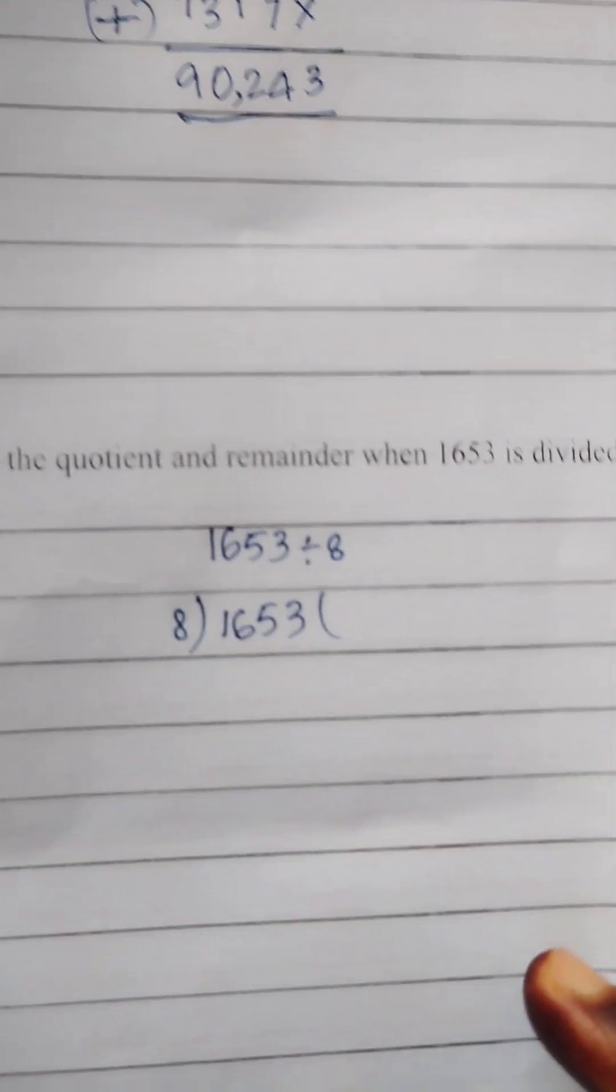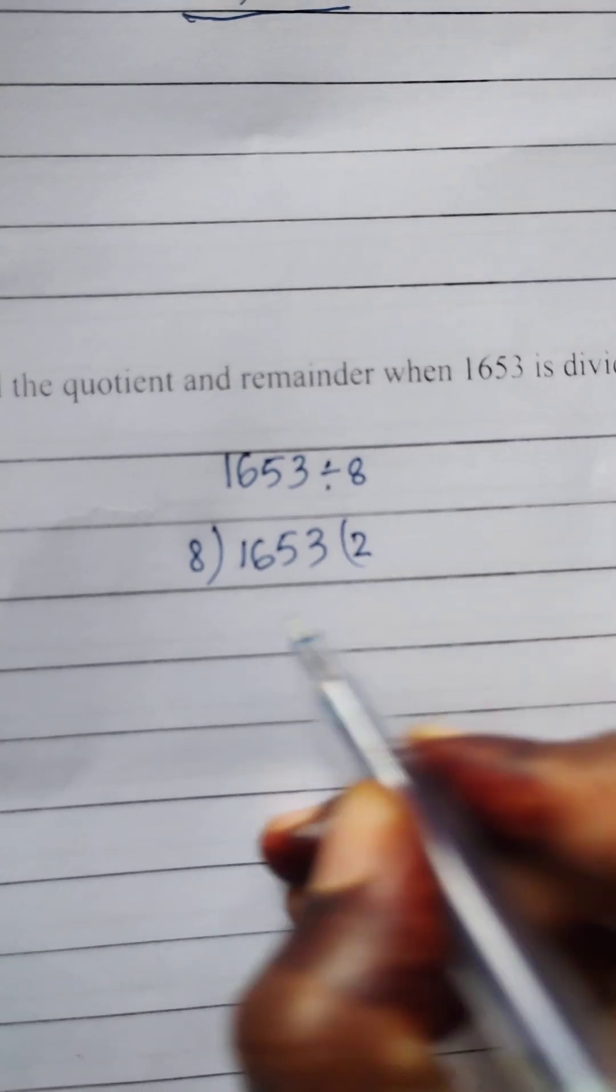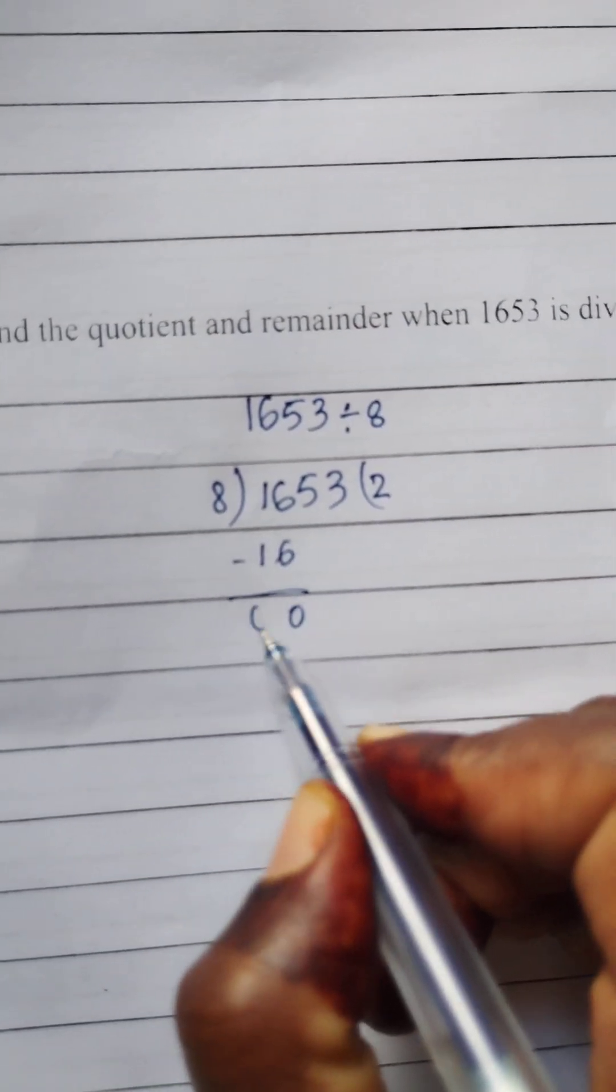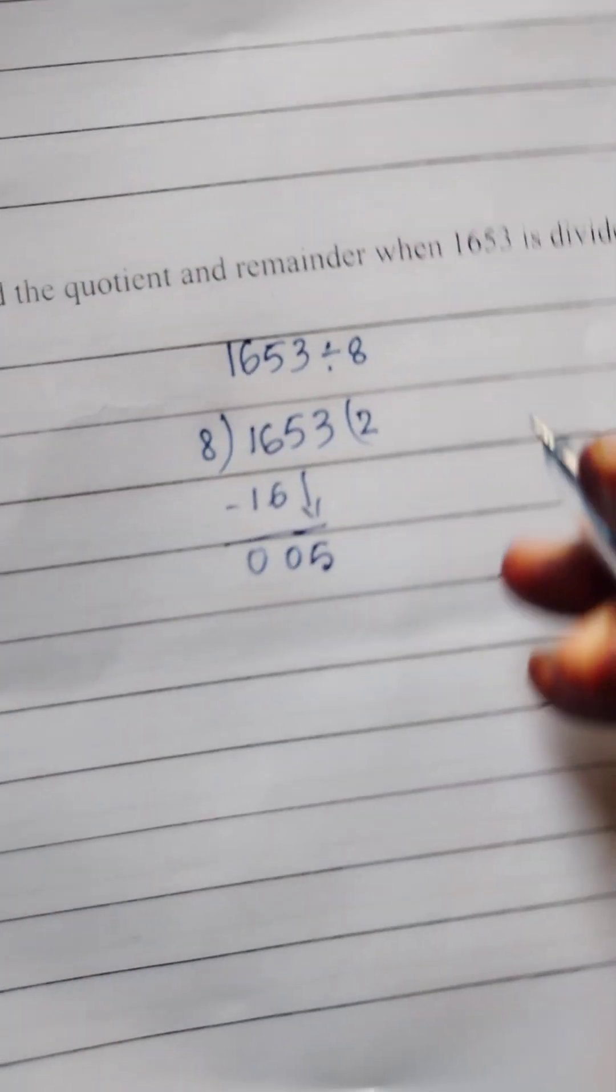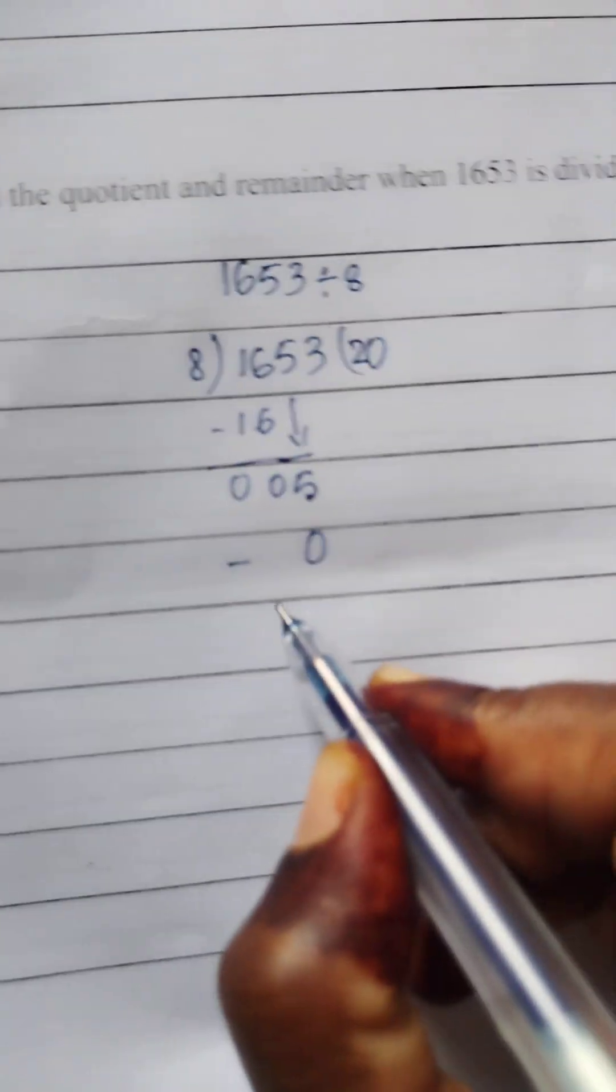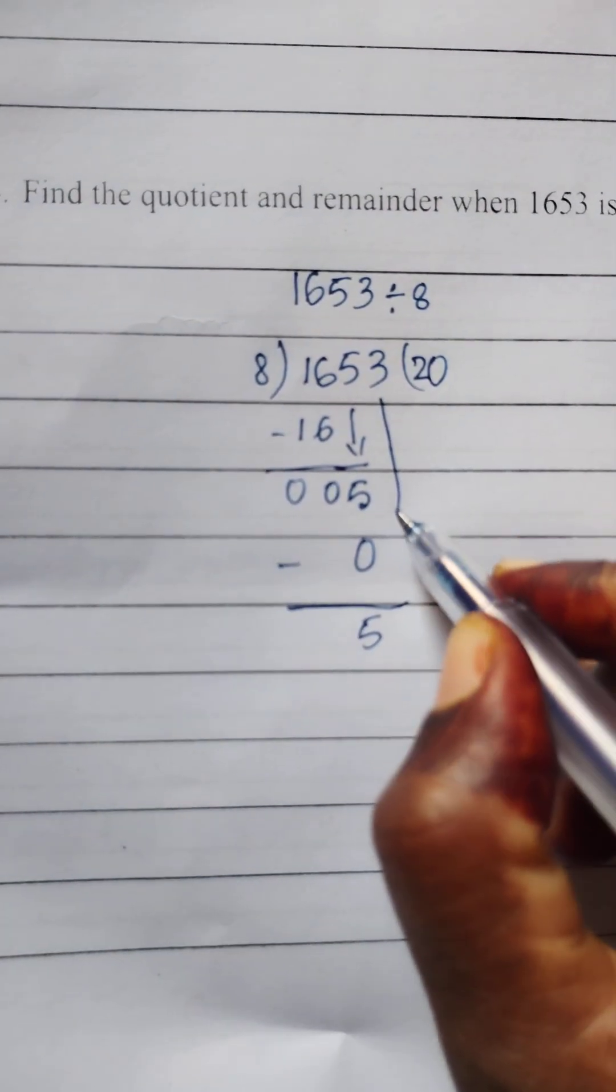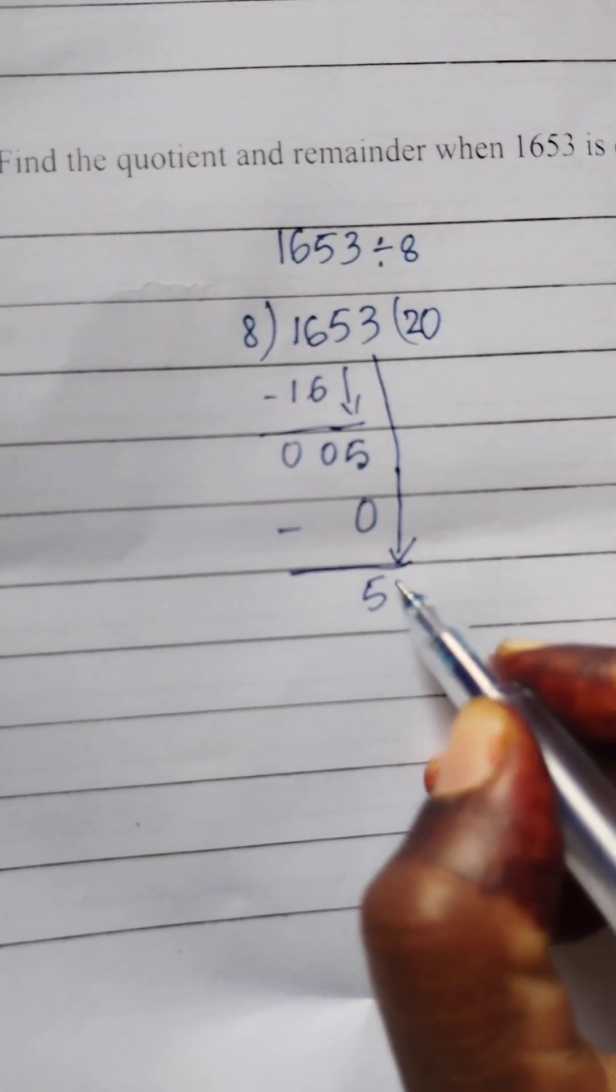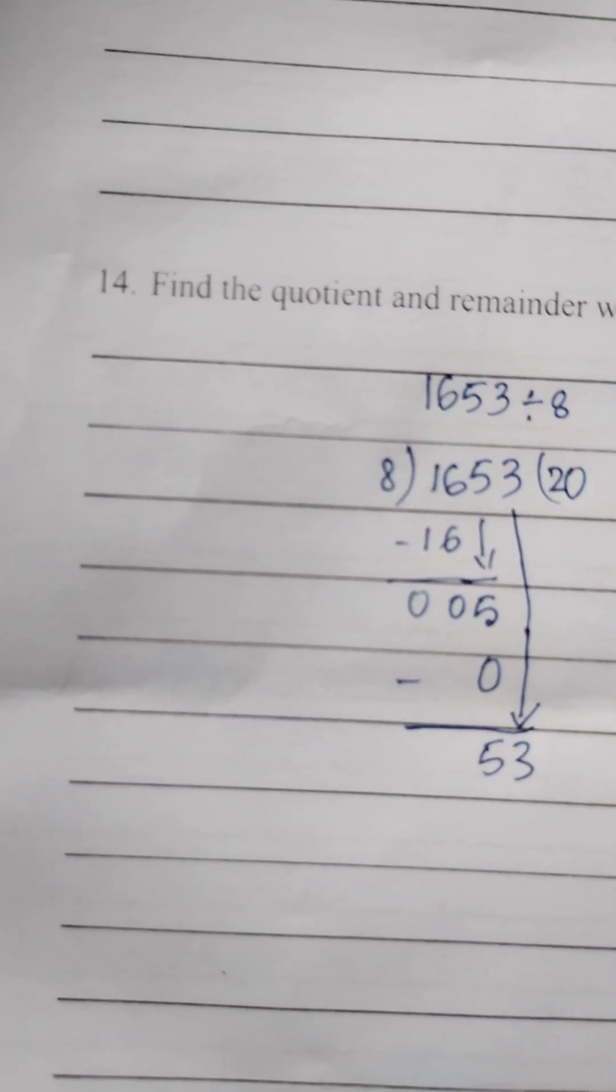Here we have 8 ones in 16. 8 twos are 16. Do the minus. 0. Take down now, 5. We can't do this one. Now 8 zeros are 0. Do the minus, 5. Take down now again, 3. 53. We have 8.